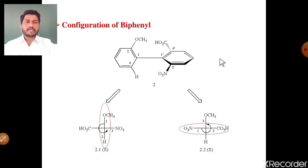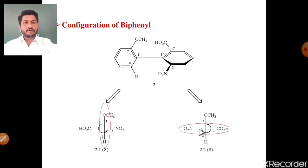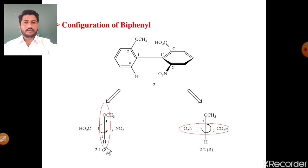Viewing the same biphenyl molecule from the right side: the first benzene ring has acid group and nitro group — these two groups are out of plane. Groups present out of plane are always on the horizontal line — carboxylic acid group on the right side and nitro group on the left side. Priority: nitro group first priority, carboxylic acid group second priority. Then for the second ring, methoxy group and hydrogen are on the vertical line — methoxy group third priority, hydrogen fourth priority. The rotation from first to second to third is again anticlockwise, confirming S configuration. This biphenyl molecule shows optical activity and its configuration is S.